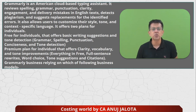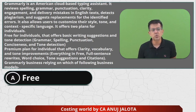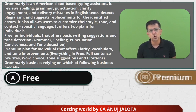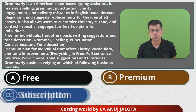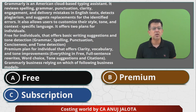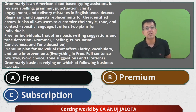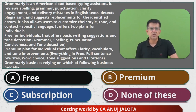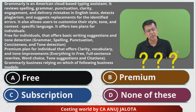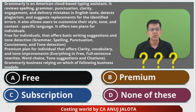So Grammarly's business is relying on which of the business models? Here are the four options: first, it is free — but it's not completely free, there is a premium version also. Second, premium — but it's not completely premium, it has a free version also. Third, subscription — it's not compulsory to pay something every month. Fourth, none of these. It's an easy one — we have discussed this in class many times. If you know the answer, comment below please.